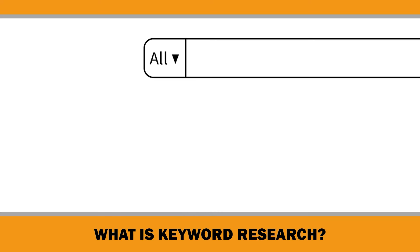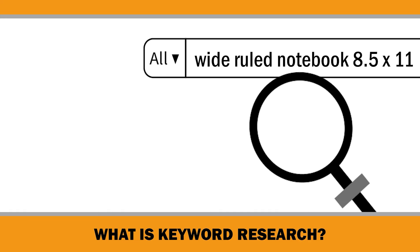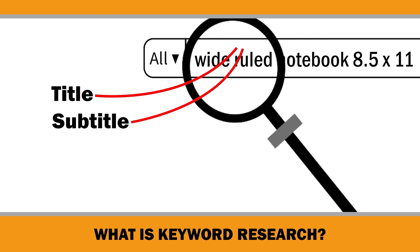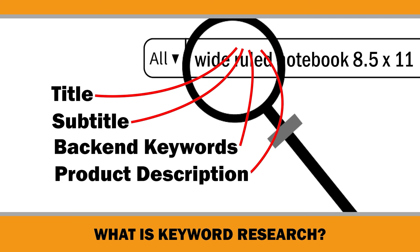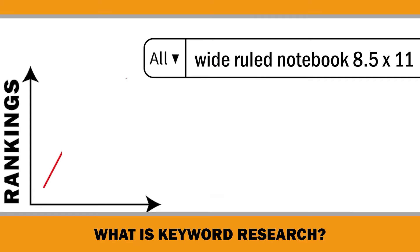What is keyword research? Keyword research is the process of identifying the most frequently searched words and phrases that customers type into the Amazon search engine when looking for products. The goal is to strategically incorporate these keywords into your product's title, subtitle, backend keywords, product description, and A-plus content to improve its visibility on Amazon's search engine results page.